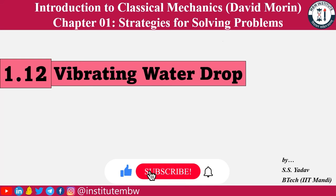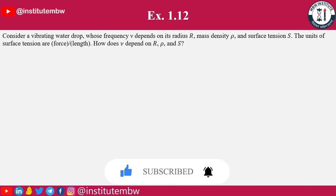In this video we will solve problem 1.12. Let's get started. Consider a vibrating drop whose frequency depends on its radius r, mass density rho, and surface tension S. Surface tension is basically a force per unit length, and we have to find out the dependence of frequency on r, rho, and S.